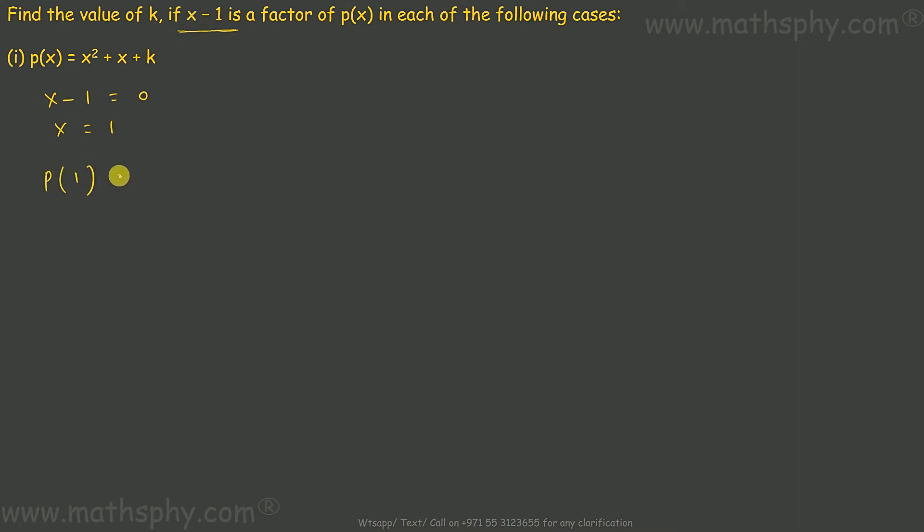Let's replace 1 here. 1 squared plus 1 plus k should be 0. That's 1 plus 1 plus k, which is 2 plus k. Means 2 plus k should be equal to 0, so k is 0 minus 2, which is negative 2.